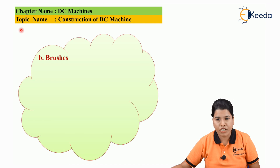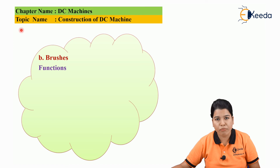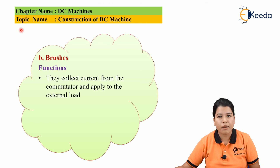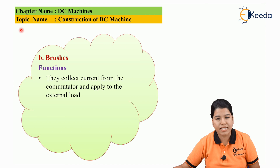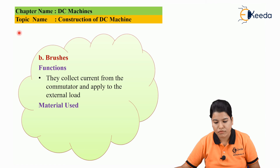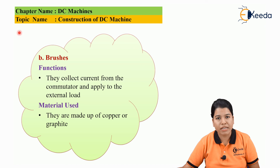Next is brushes. Brushes basically collect the current from the commutator and give it to the external supply. Brushes are made up of carbon or graphite material.